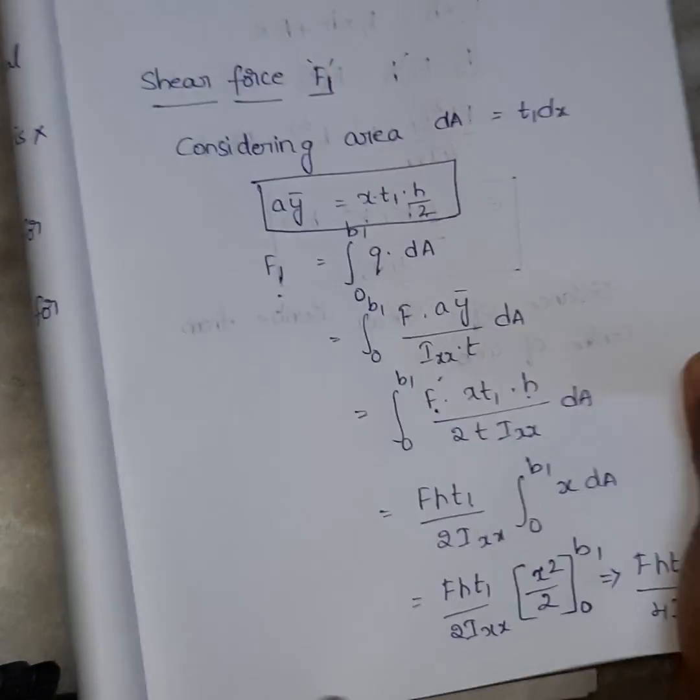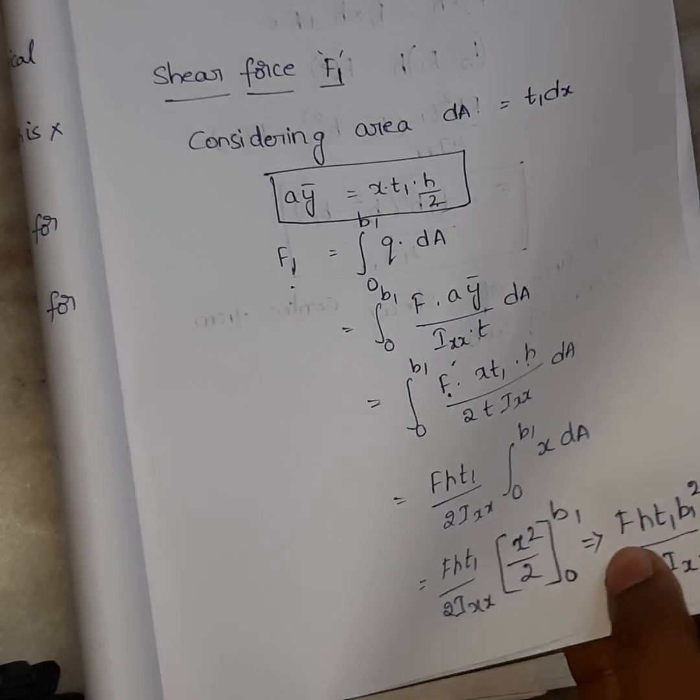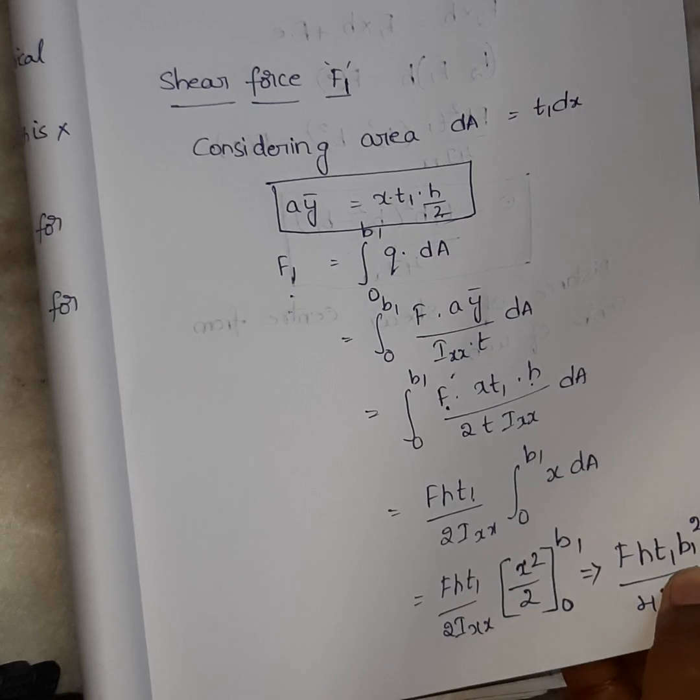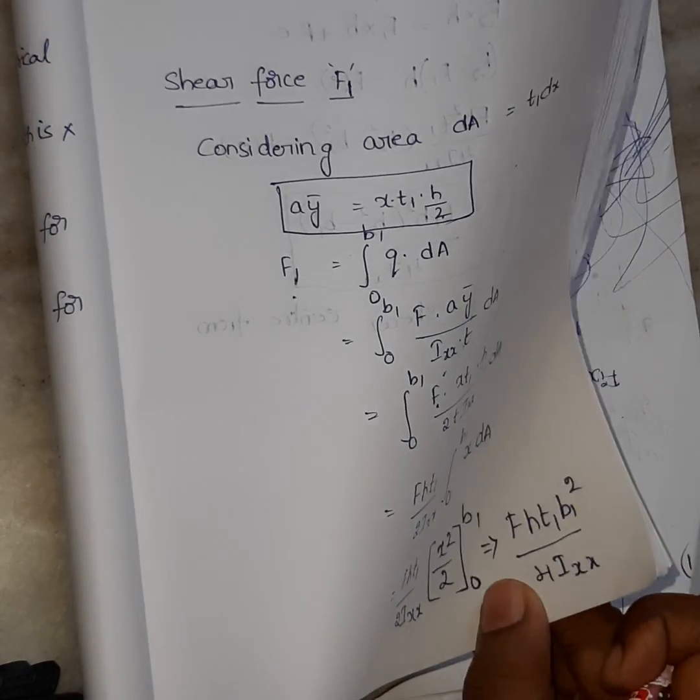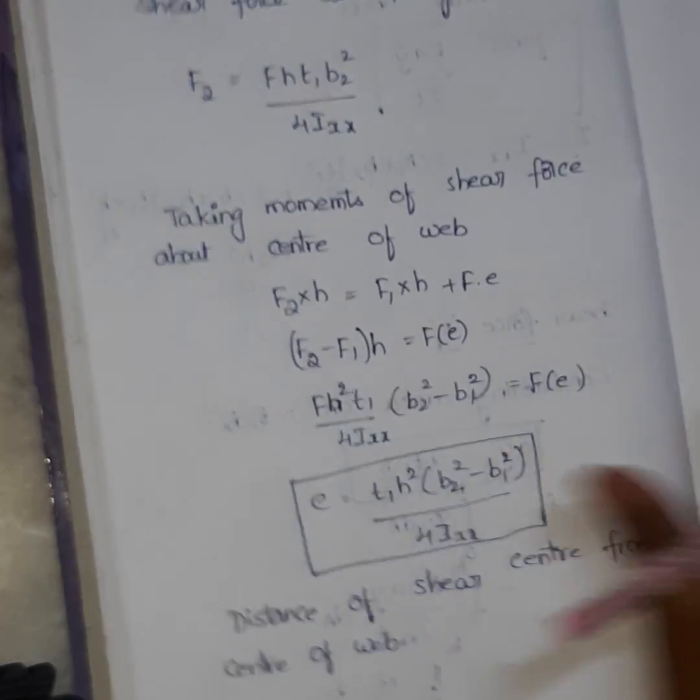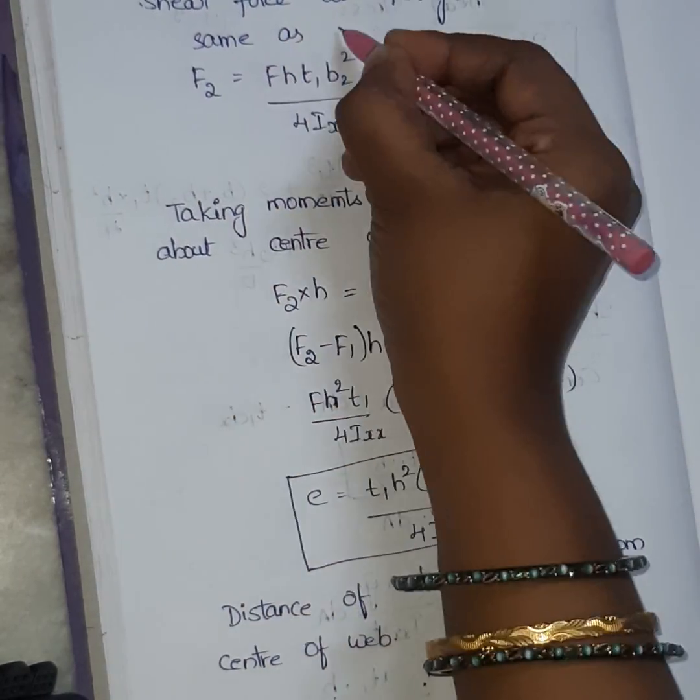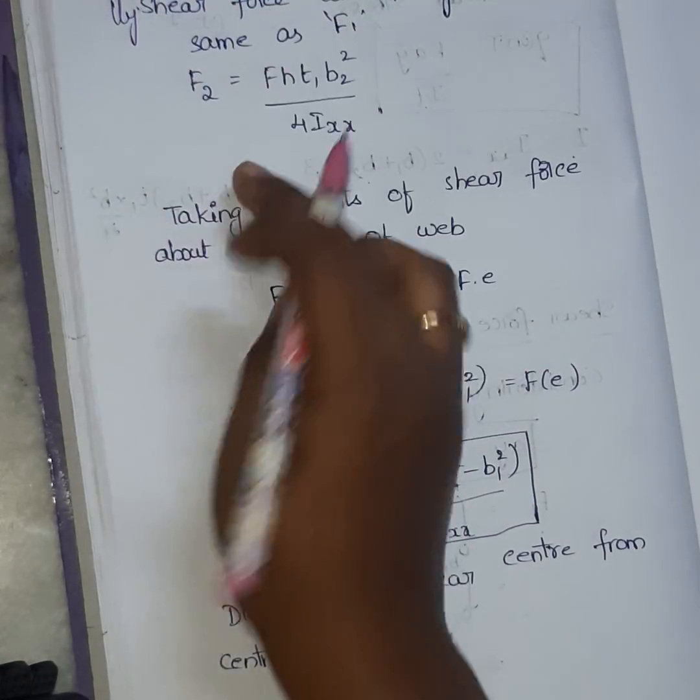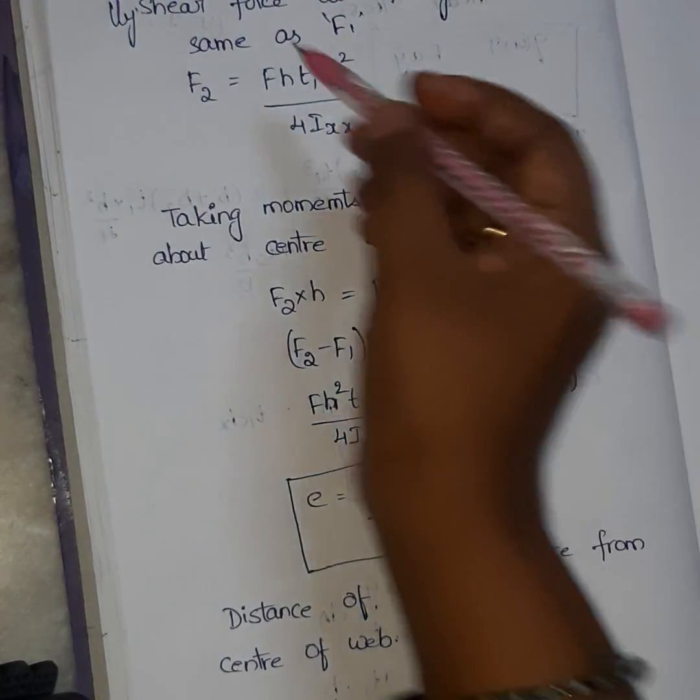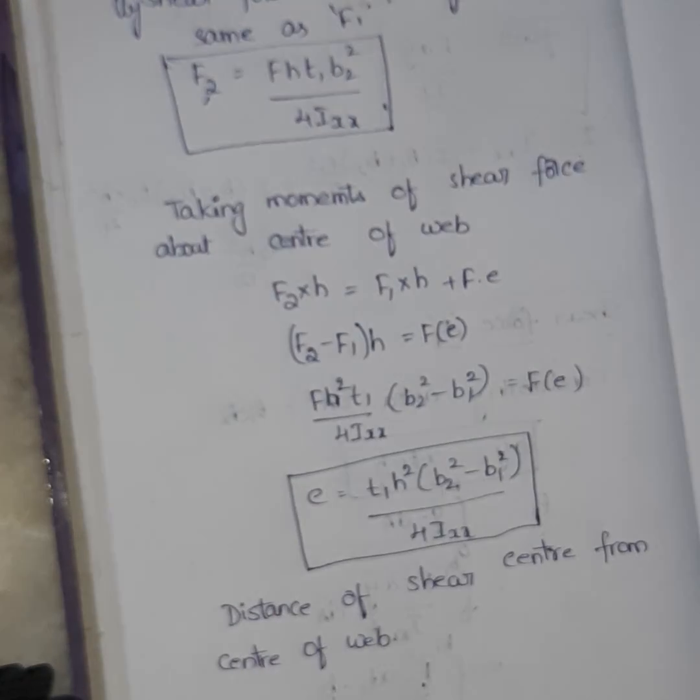So shear force at F2, see here. Shear force at F2 same as shear force at F1. The difference is shear force F into H T1. Next, here the breadth we take is different. So here it is B2 square by 4IXX. The remaining process is all the same. I have written directly, shear force at F2 is same as F1. So similarly, here instead of taking B1, just I have substituted in place of B1, B2.